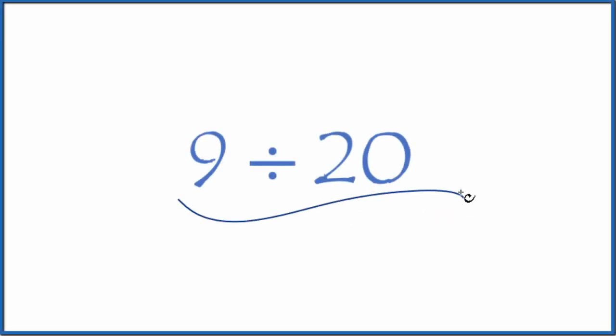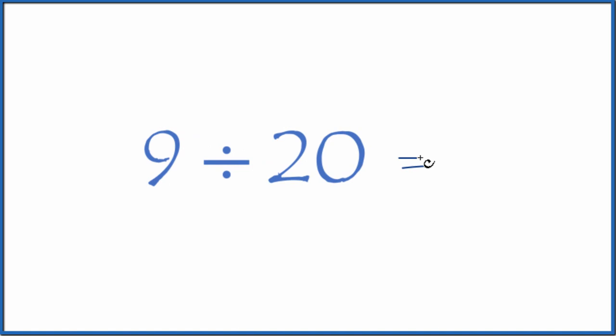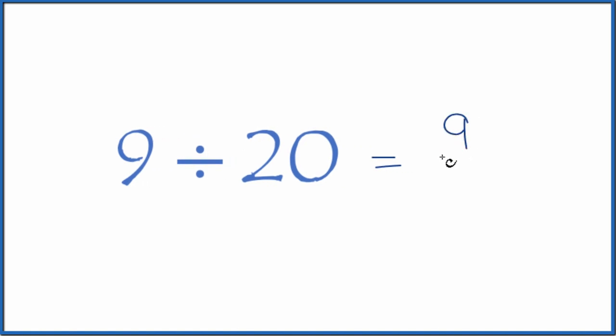Let's divide 9 by 20. We could think of this as a fraction, 9 over 20, 9 twentieths. So that's one way to think about it.